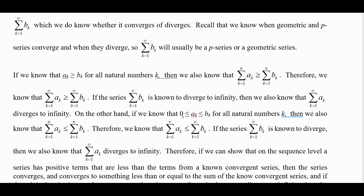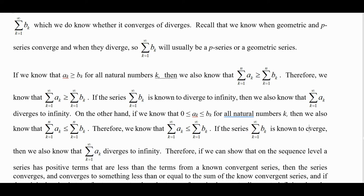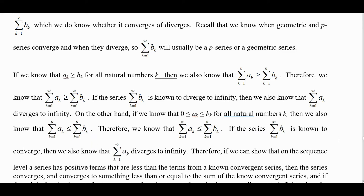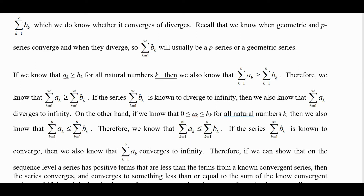On the other hand, if a sub k has positive terms but is less than or equal to b sub k for all natural numbers k, then the sum of a sub k from k equals 1 to n is less than or equal to the sum of b sub k, and taking limits, the sum from k equals 1 to infinity of a sub k is less than or equal to the sum of b sub k. So if the sum of b sub k is known to converge, then we know that a sub k converges as well.